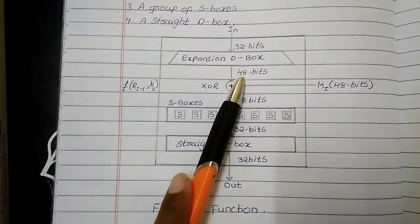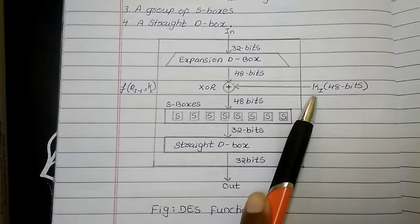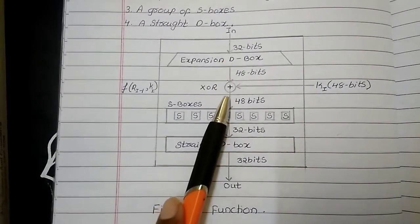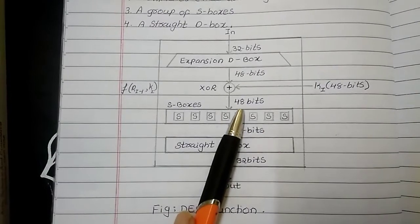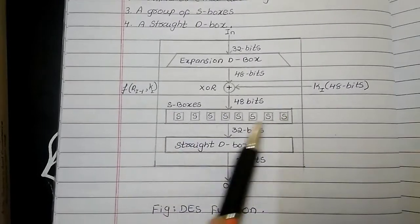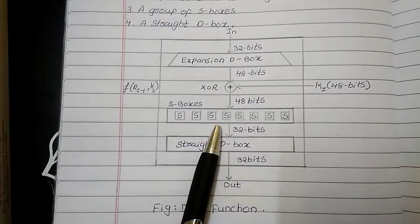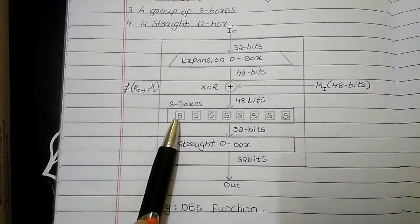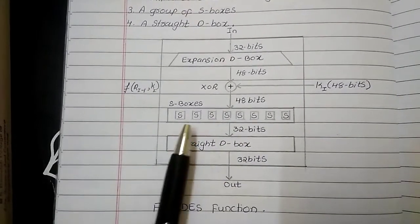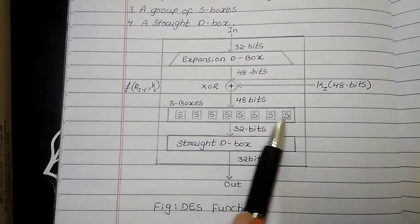Then, the 48-bits is XORed with the key. Key is 48-bit again. So, I am representing key with Ki. Ki and the expansion D-box 48-bits are XORed to produce 48-bit output. That 48-bit output is applied to a group of S-boxes. Now, here you can see there are 8 group of S-boxes. The work of each S-box is to accept this 48-bits which is divided into 6-bit each. That means, each S-box is accepting 6-bits.